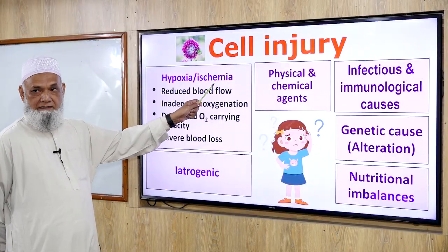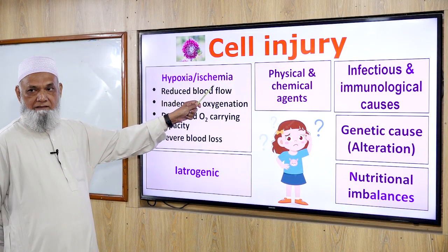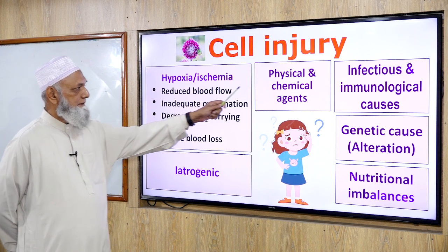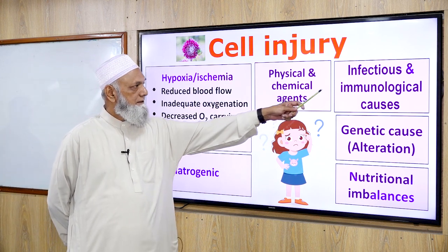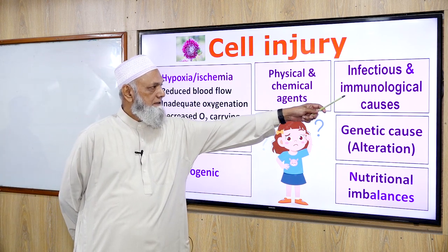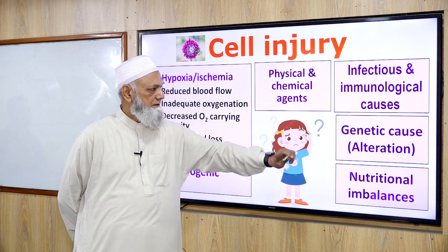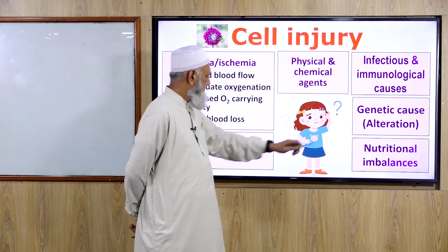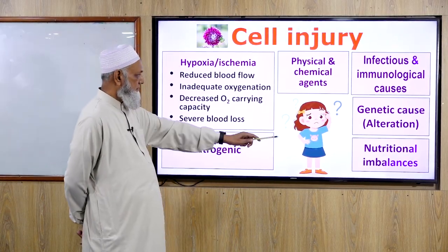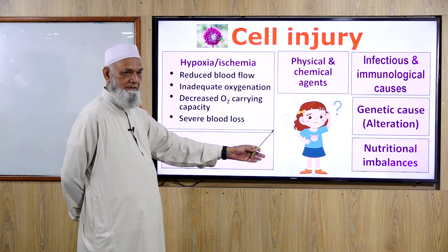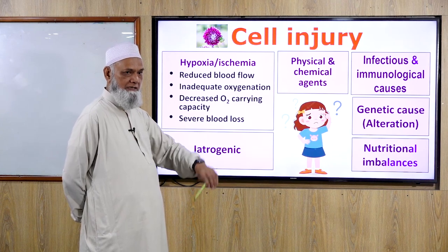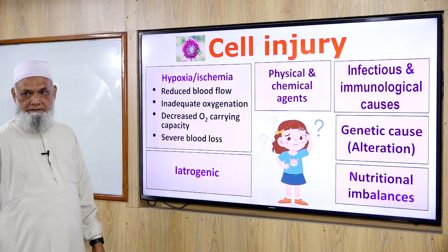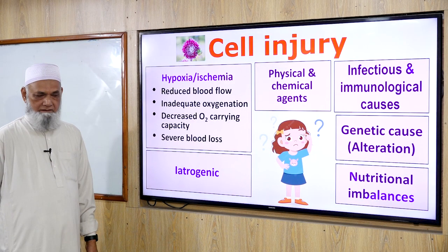The causes of cell injury include hypoxia or ischemia, physical and chemical agents, infectious and immunological causes, genetic causes, nutritional imbalances — over-nutrition or under-nutrition — and iatrogenic causes.